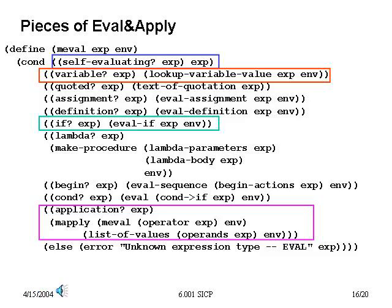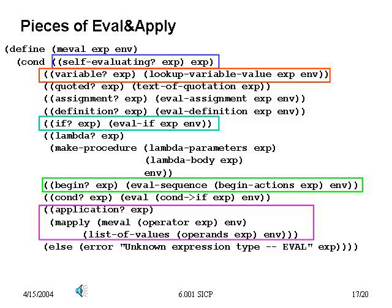What about ifs? We know what an if should do: take a sequence of expressions, evaluate the predicate sub-expression, and depending on that value, either evaluate the consequent or the alternative. And if you look in the code we've handed out, you'll see this does exactly the right thing. What about begins? A sequence is identified either by an explicit begin statement or in the body of a procedure. So we want to get out the set of expressions and evaluate them.